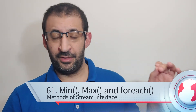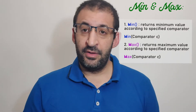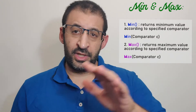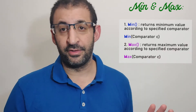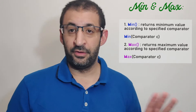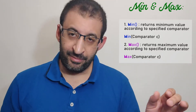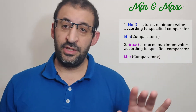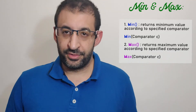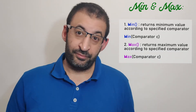So we will see now the method min and max. What is this method min and max for processing the stream? The min method retrieves the minimum value object in the stream. But you must use a custom comparator — not by default. And the same thing for max: max returns the maximum value in the stream, also by using a custom comparator.